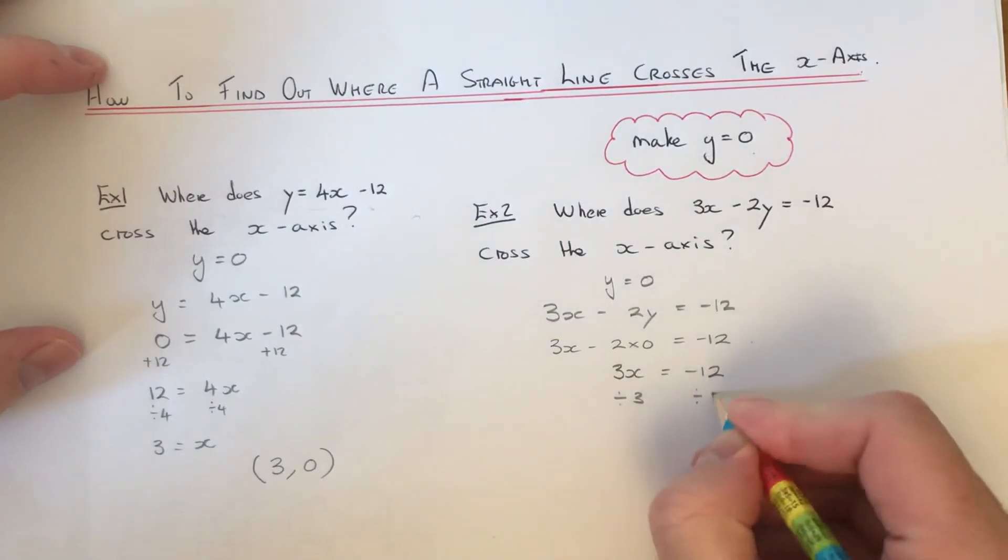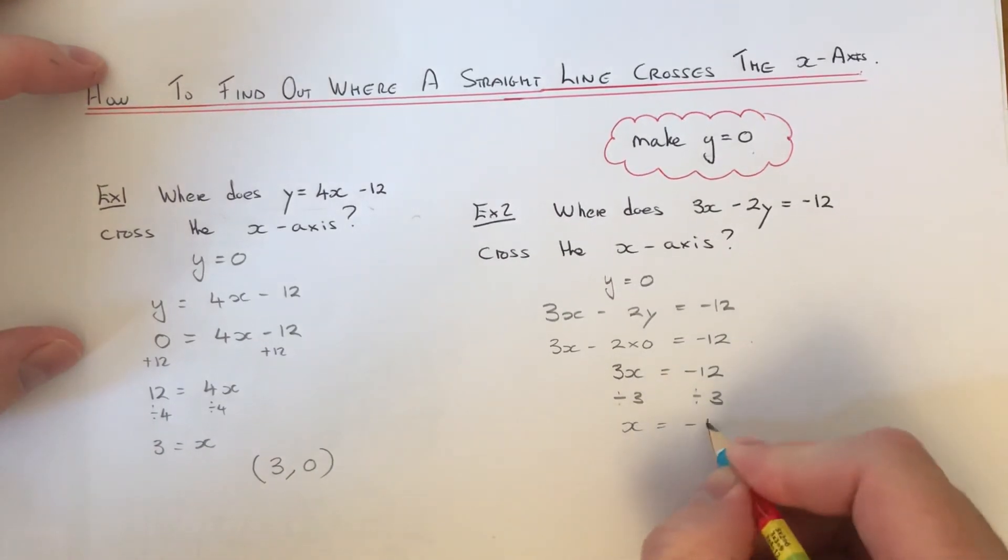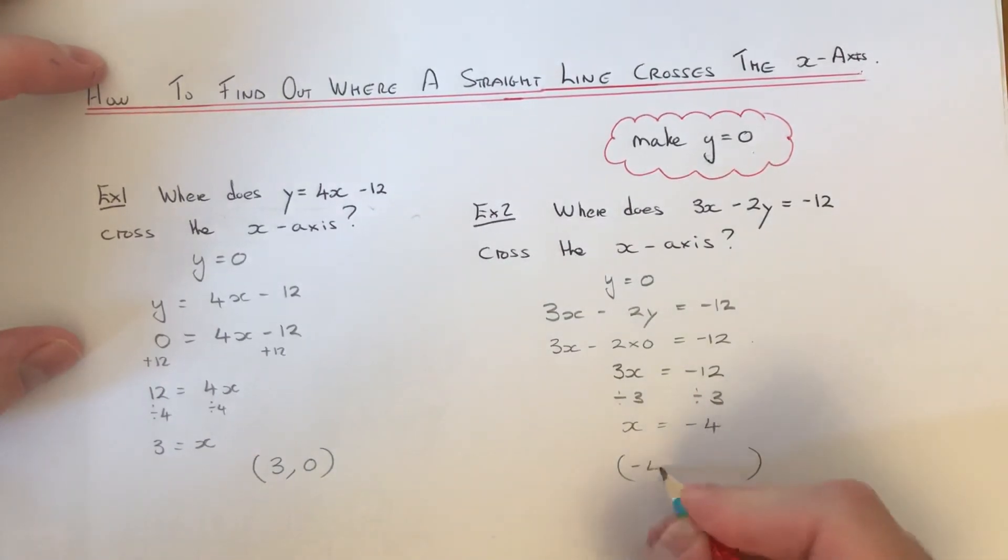We just need to divide by 3, and x is minus 4. So the point where it crosses the x-axis is minus 4, 0.